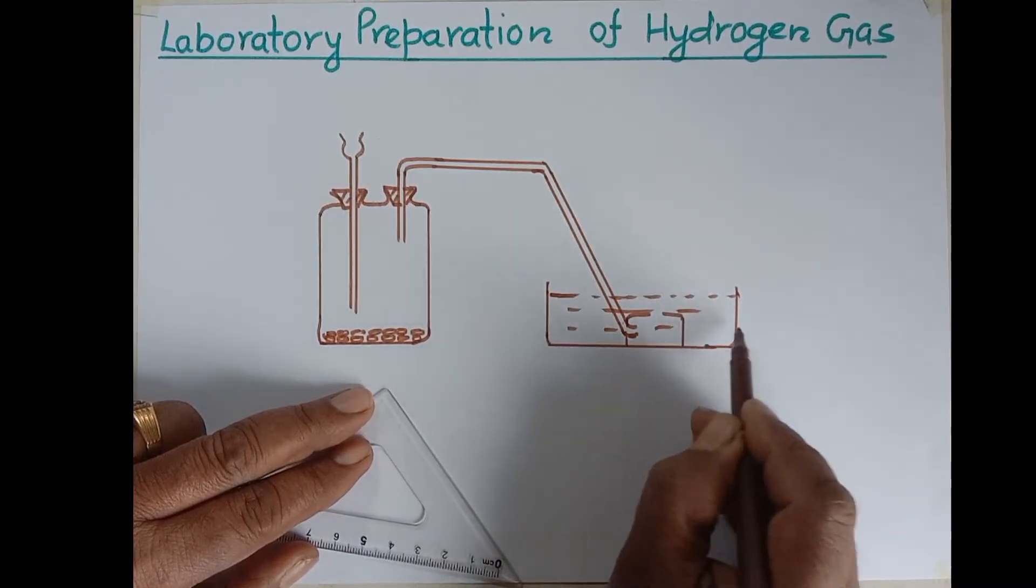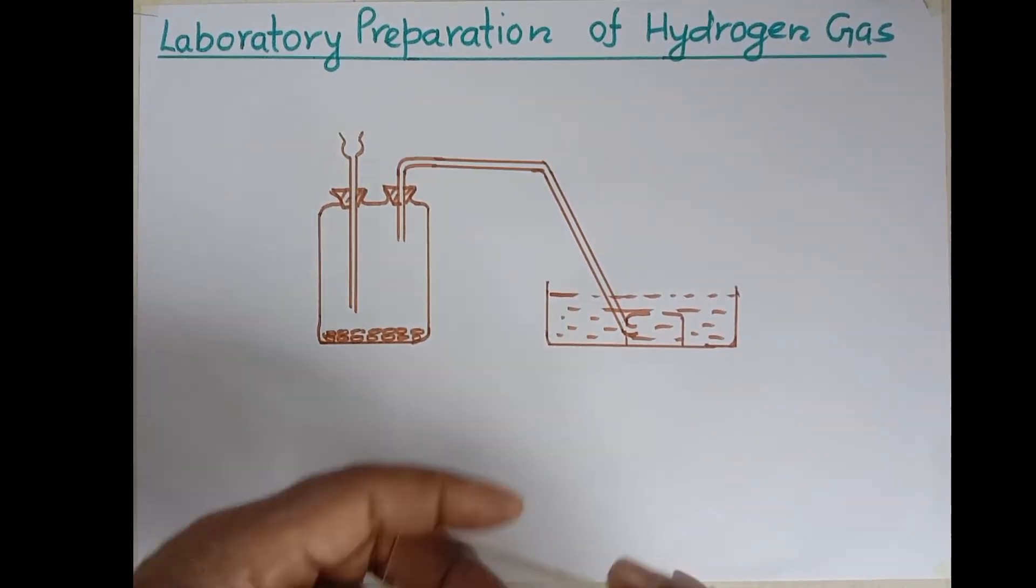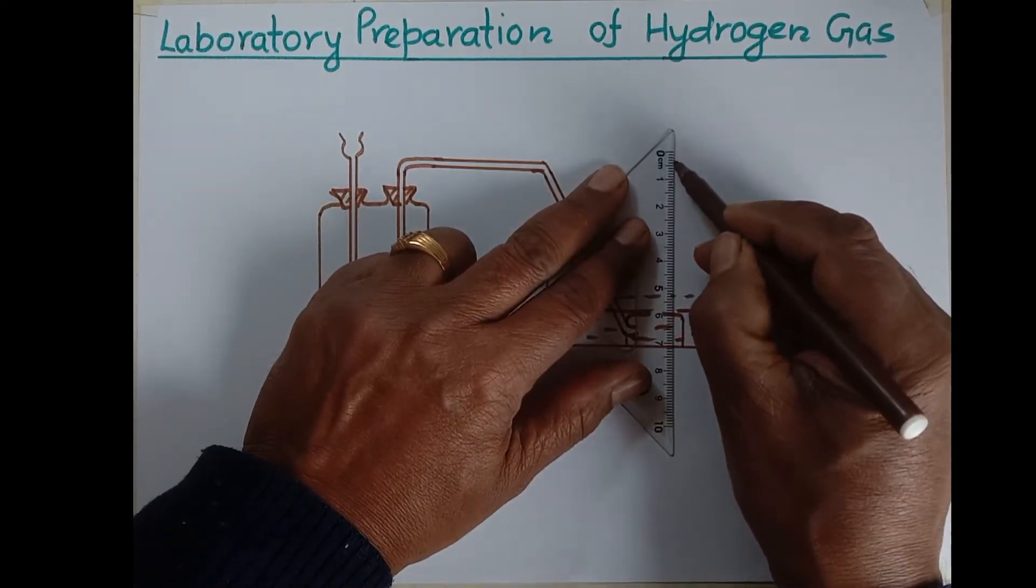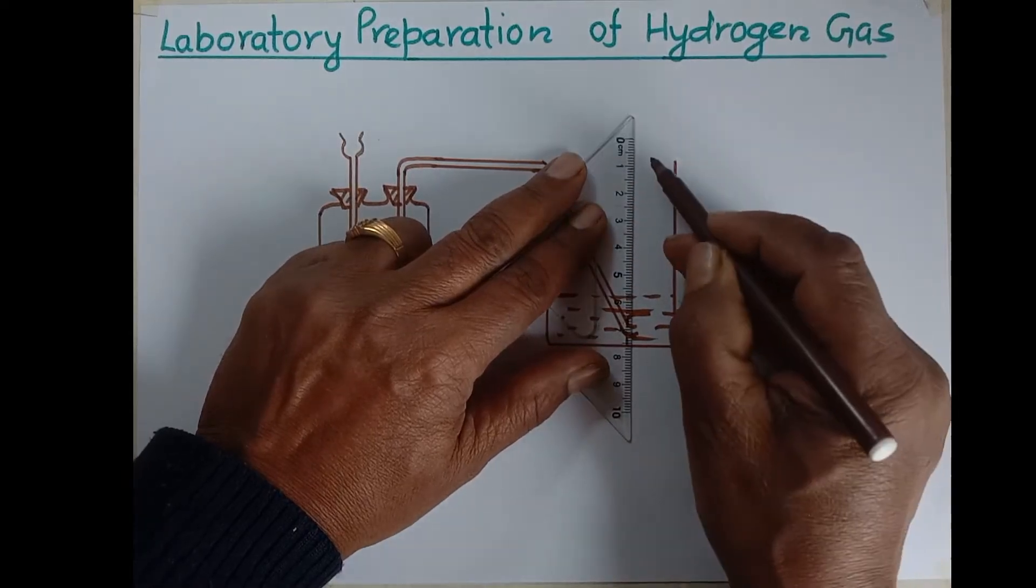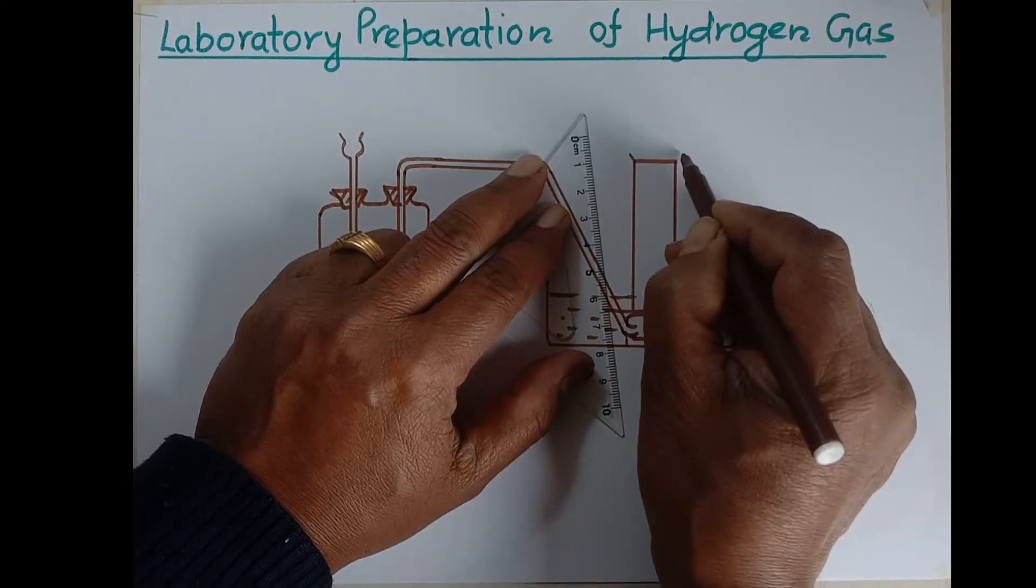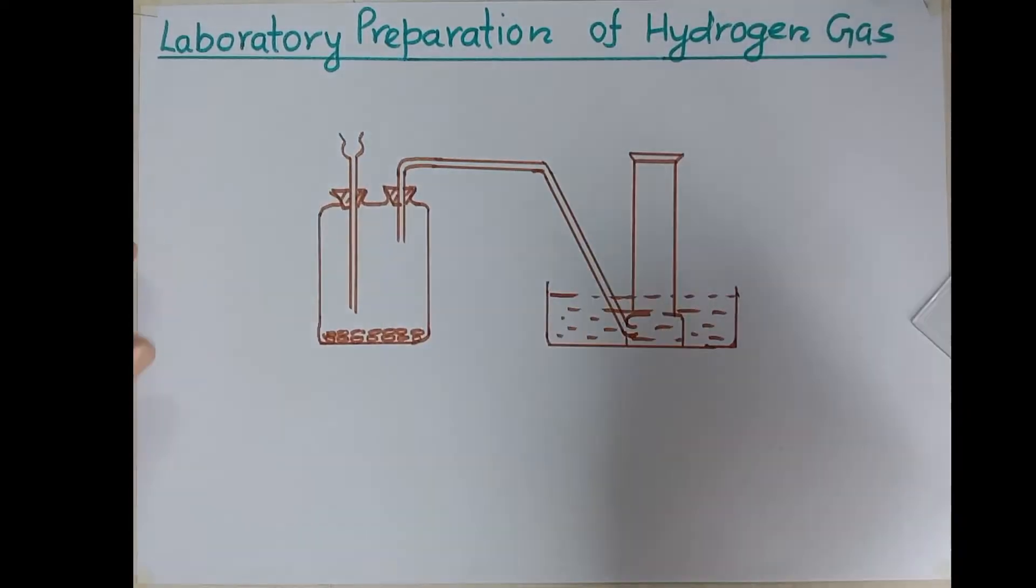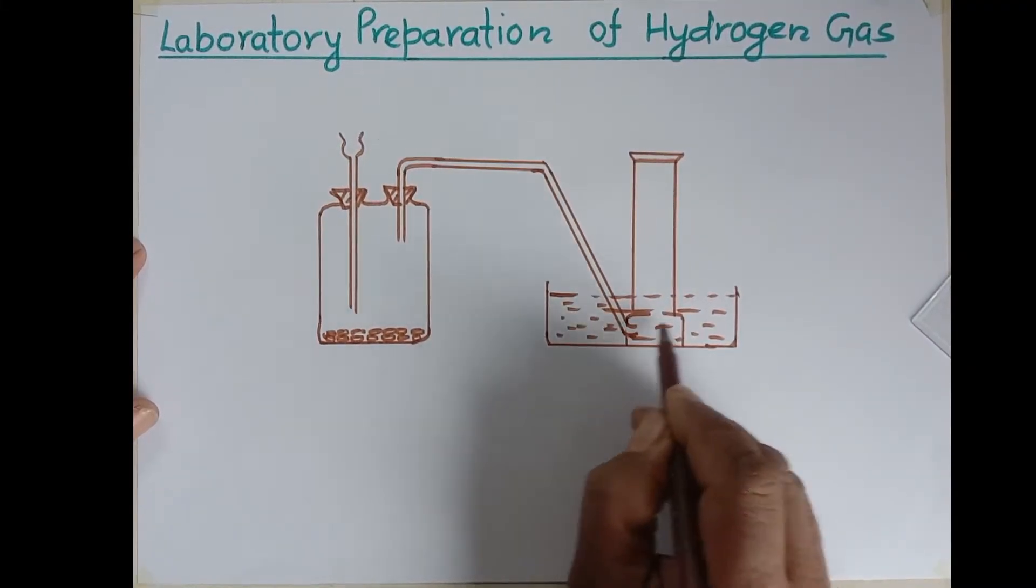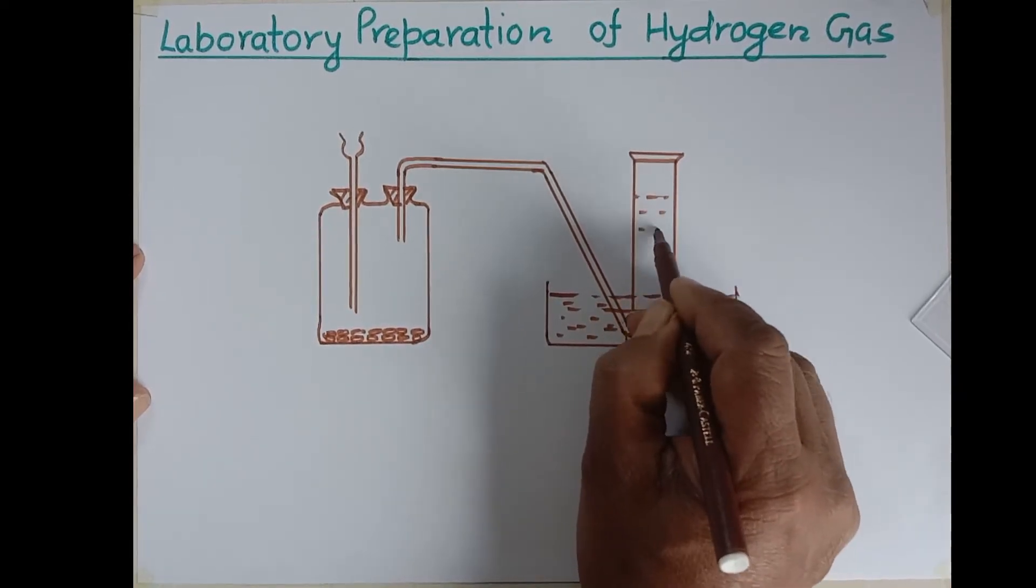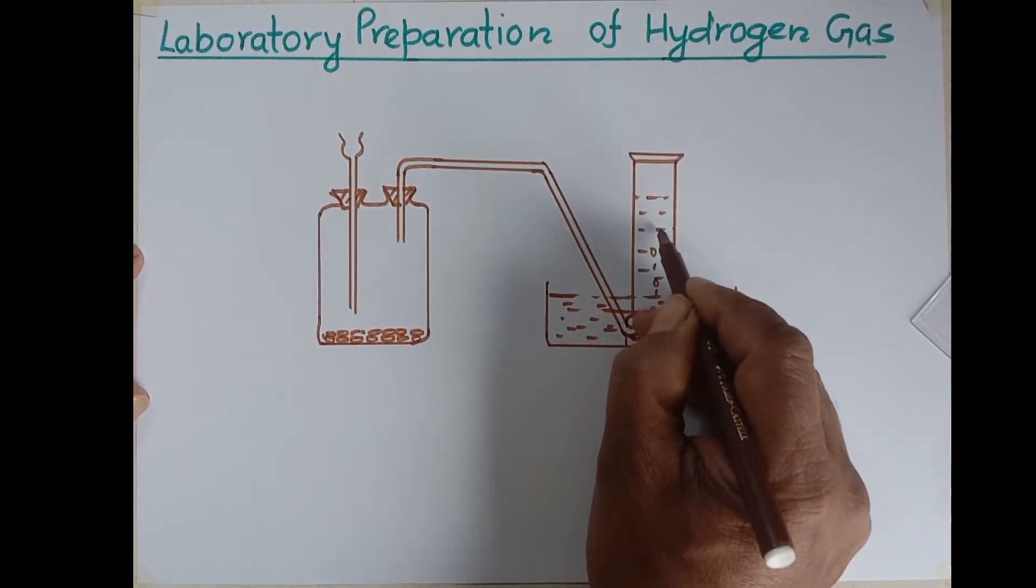All this beehive shelf is covered with water, and we have to take a gas jar to collect gas. Gas jar should be completely filled with water and small should be closed and it has to be inverted into the beehive shelf.